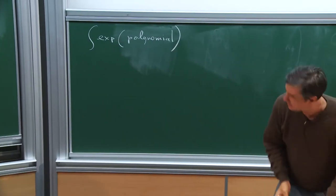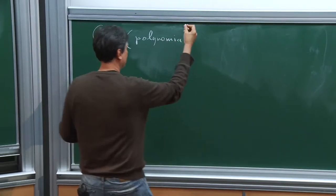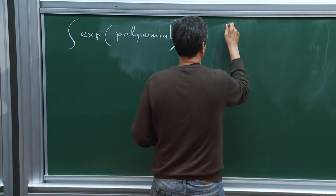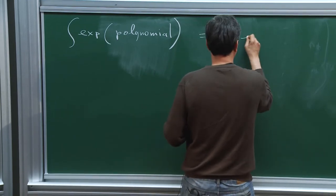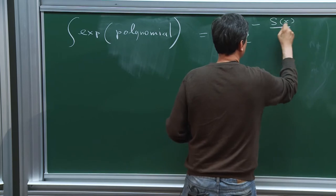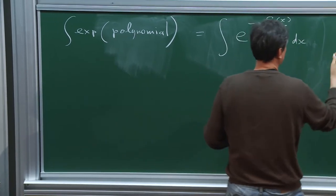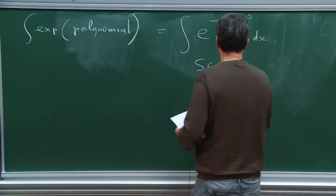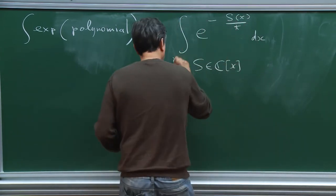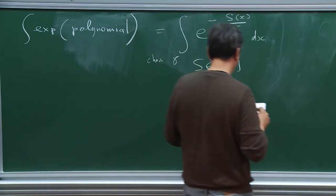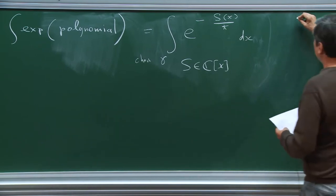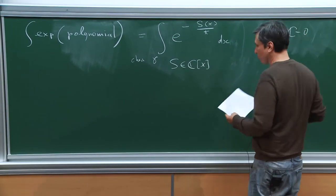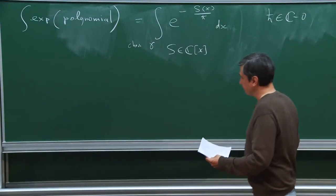For example, I will model a field theory as a kind of zero-dimensional QFT. I integrate the exponential of minus S(x) divided by h-bar times dx, where S is a polynomial in one variable — the action — and I integrate over a certain chain of integration called gamma.